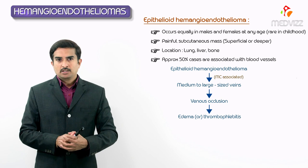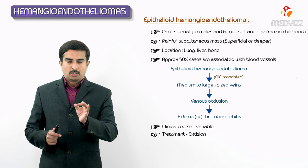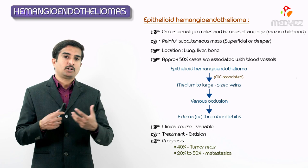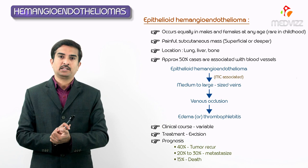The clinical course of epithelioid hemangioendothelioma is highly variable. Even though excision is curative in the vast majority of cases, approximately 40% of tumors can recur, 20% to 30% eventually metastasize, and 15% or fewer patients die because of their tumors.